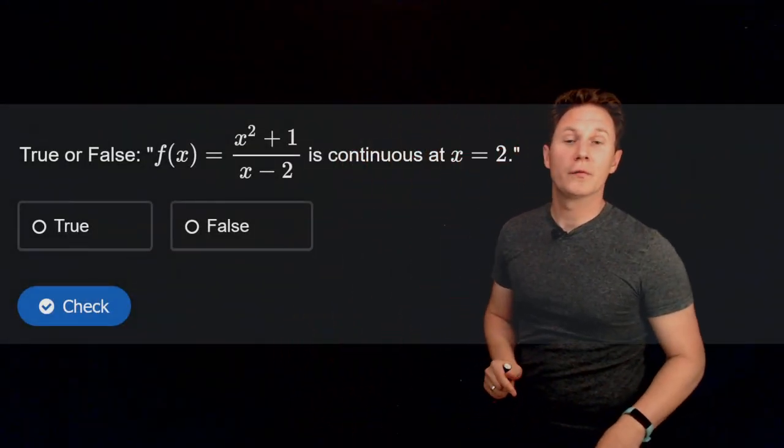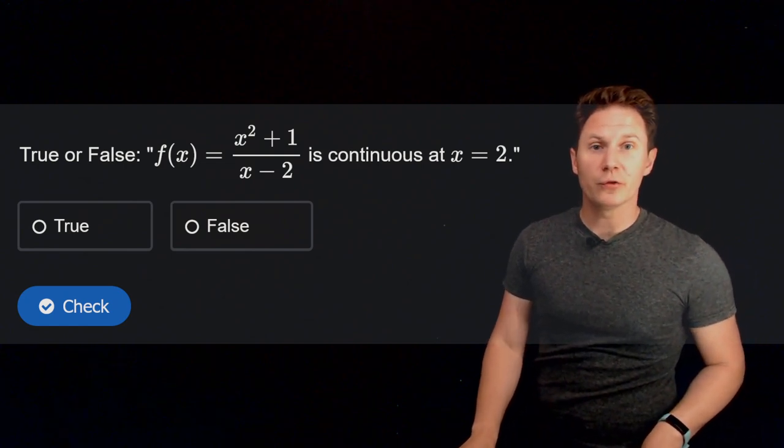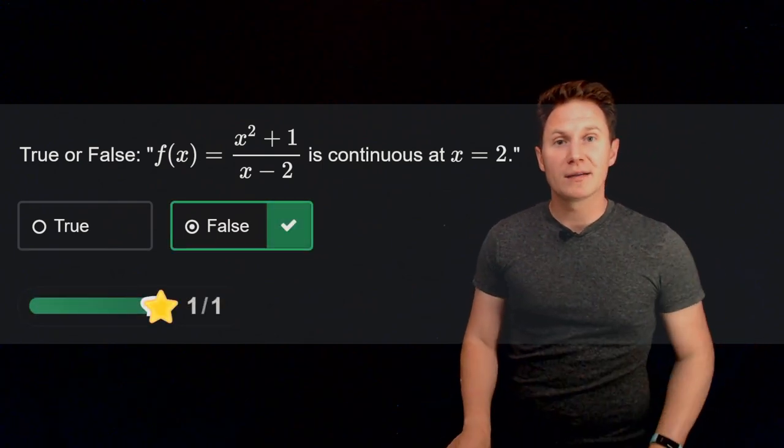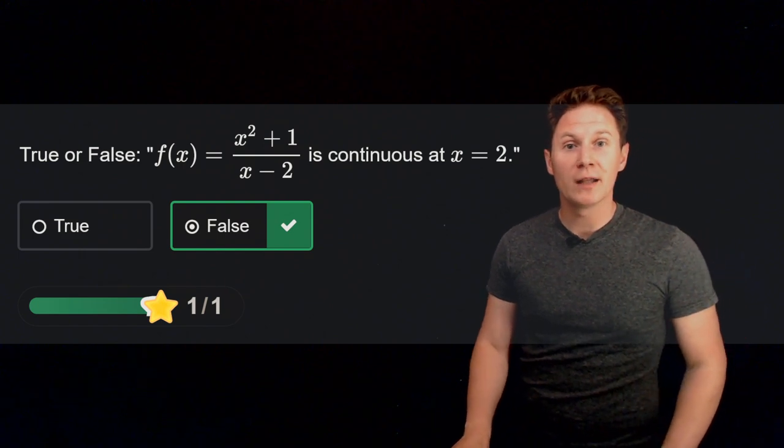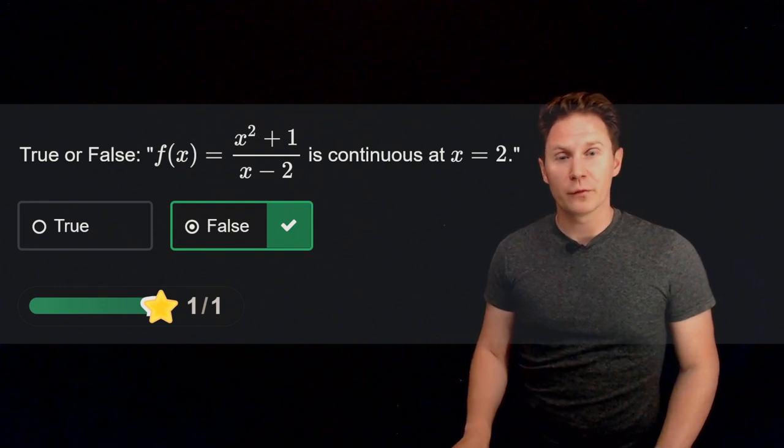Is it true or false that f of x equals x squared plus 1 over x minus 2 is continuous at x equals 2? So pause the video and select your answer. It's false. The function is not defined at x equals 2, because we would be dividing by 0 there, so this is a necessary condition for continuity.